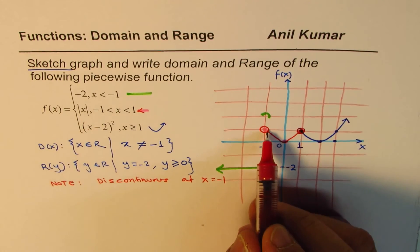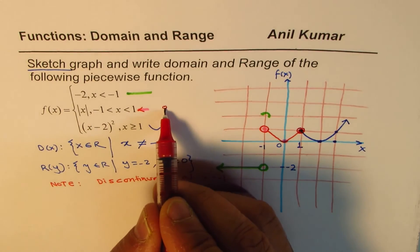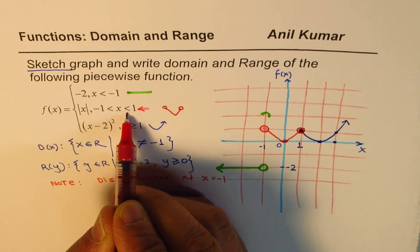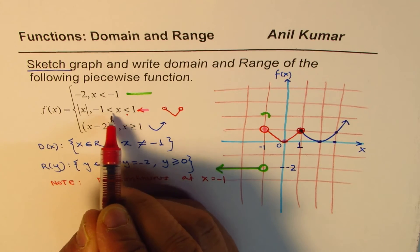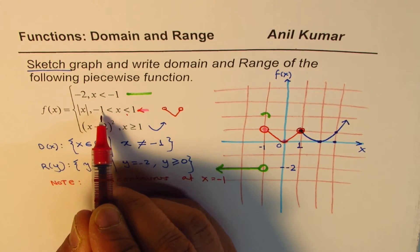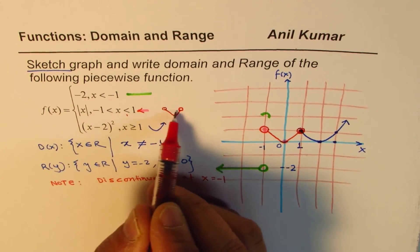For the absolute function, the portion of the graph should have been kind of like this. Do you see these open circles? Since these were greater than, I mean, x is greater than minus 1 and less than 1. So that would be open circle.